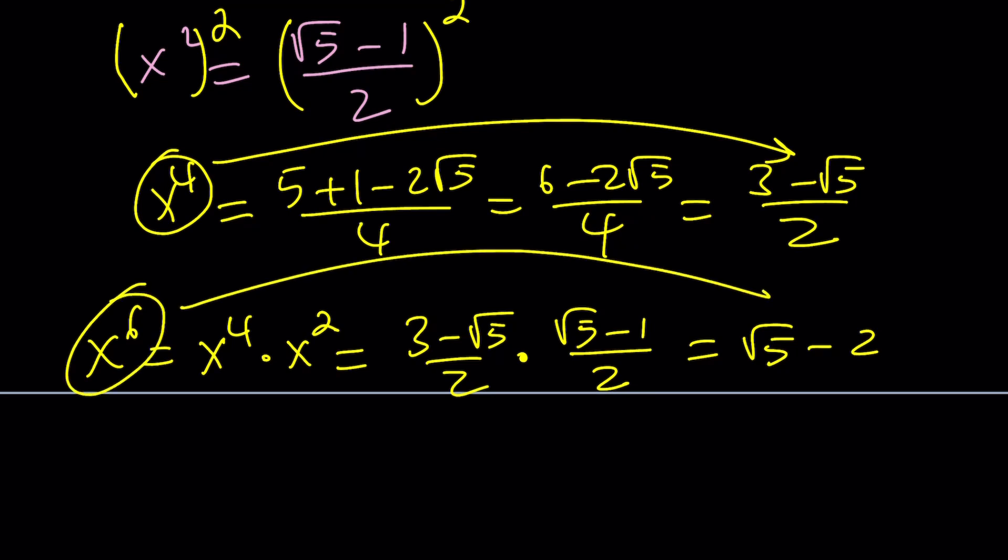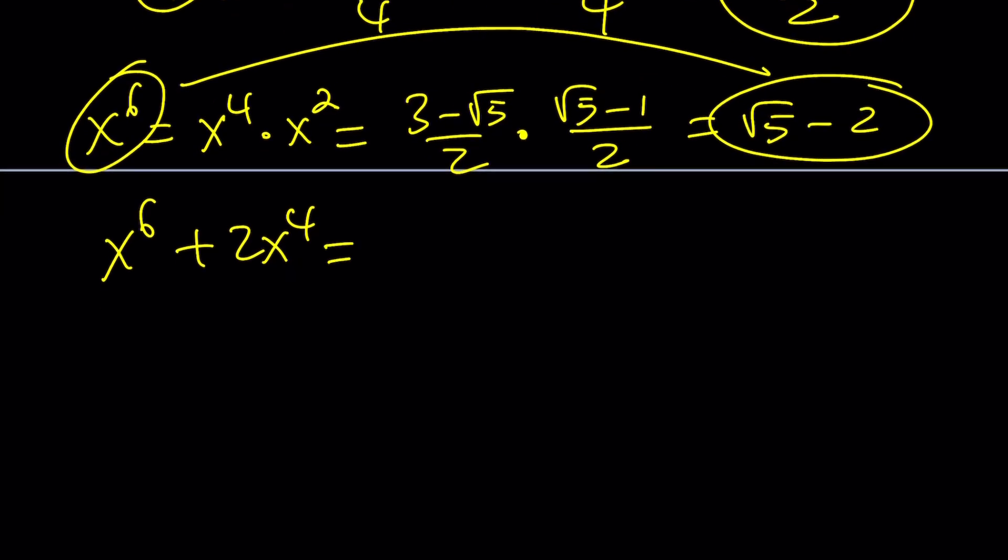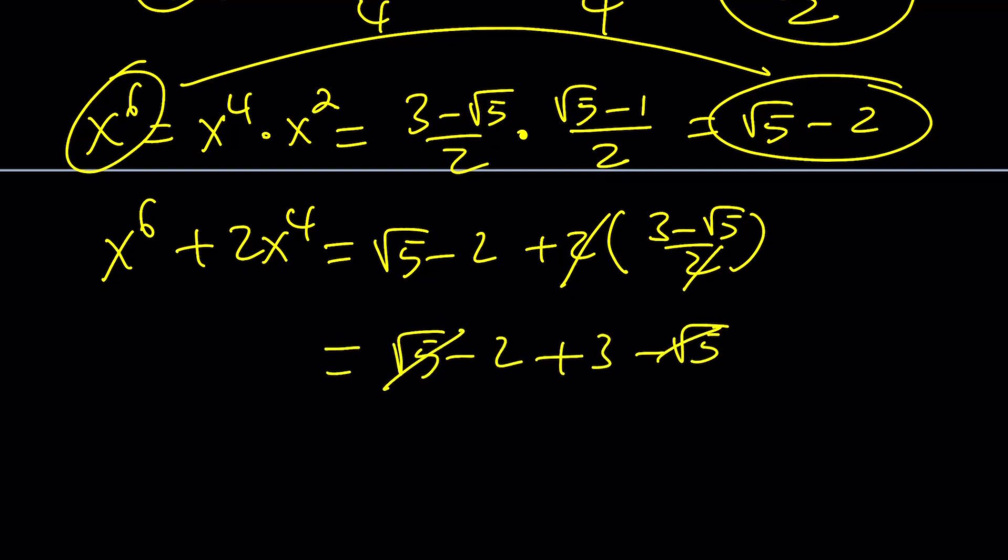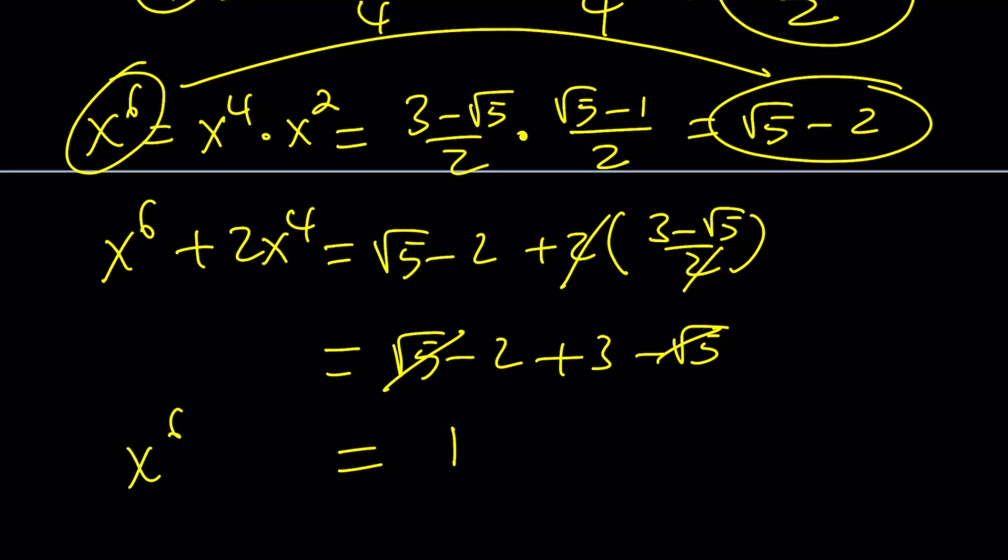So that is x to the sixth and that is x to the fourth. And what am I trying to find? x to the sixth plus 2x to the fourth. So let's go ahead and plug it in. x to the sixth is root 5 minus 2. And x to the fourth is 3 minus root 5 over 2. The 2s cancel out, leaving us with root 5 minus 2 plus 3 minus root 5. Root 5 cancels out, leaving us with 1. So the answer is 1, which is x to the sixth plus 2x to the fourth. So that's the end of the third method.